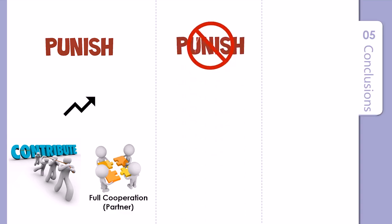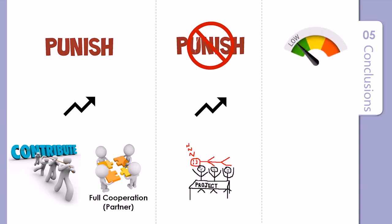Second, when there is no punishment opportunities, the average contributions converge close to full free riding for both treatments. Also, the more one's contribution falls below the average contribution of other group members, the more heavily he or she is punished.